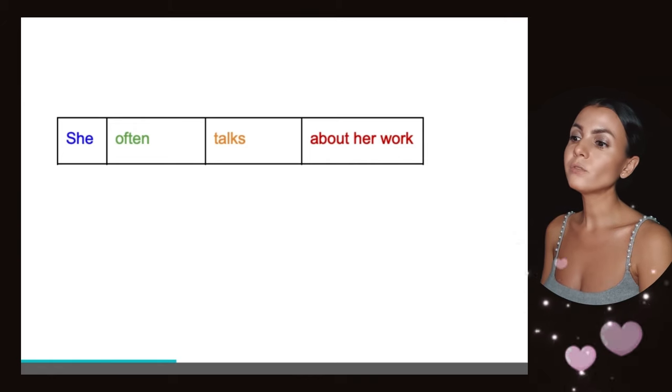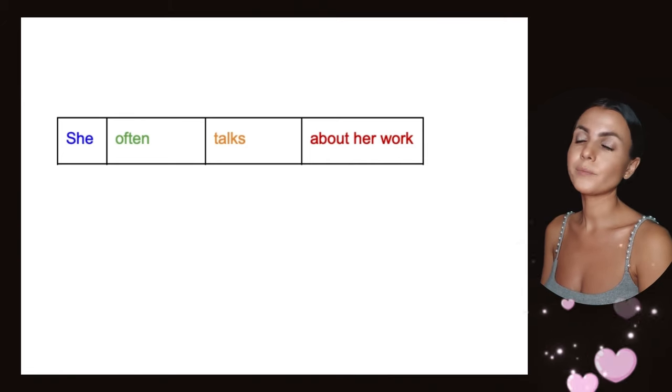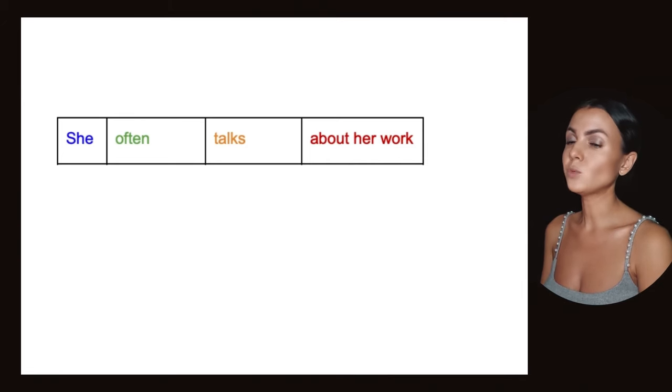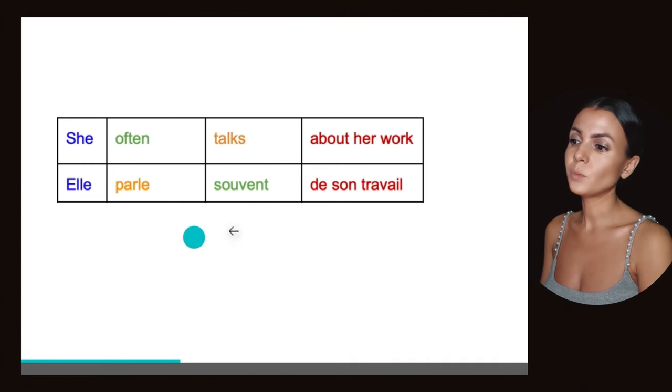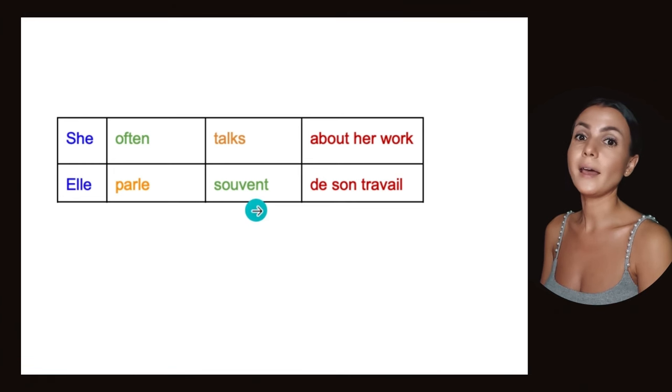So what happens here? She often talks about her work. Once again, in French, we will inverse: Elle parle souvent de son travail. So first we put the verb and then we put the adverb of frequency. She talks often about her work - Elle parle souvent de son travail.